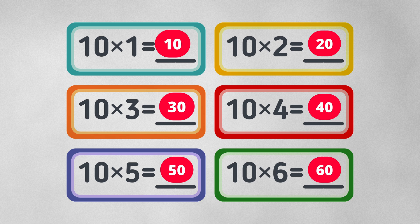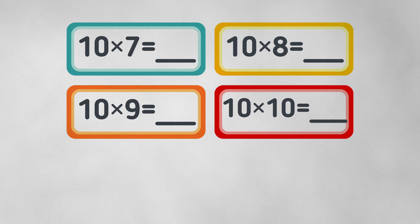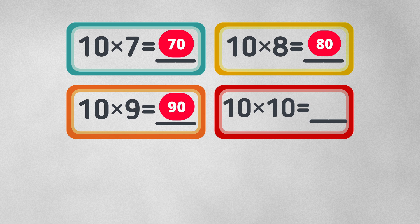10 times 7 equals 70. 10 times 8 equals 80. 10 times 9 equals 90. 10 times 10 equals 100.